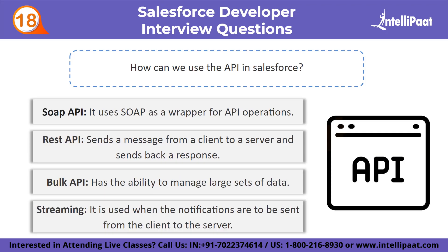Next question: how can we use the API in Salesforce? First, SOAP API uses SOAP as a wrapper for API operations. Second, REST API is ideal when you want to send a message from a client to a server and receive a response back. Third, Bulk API is an asynchronous API with the ability to manage large sets of data. Finally, Streaming API is used when notifications are to be sent from the client to the server based on a defined criterion.